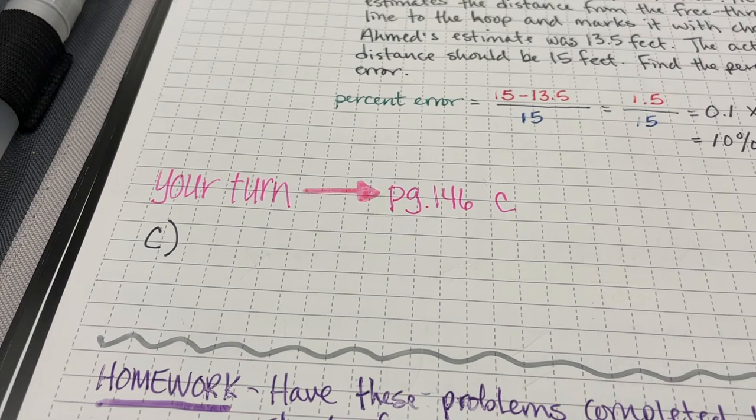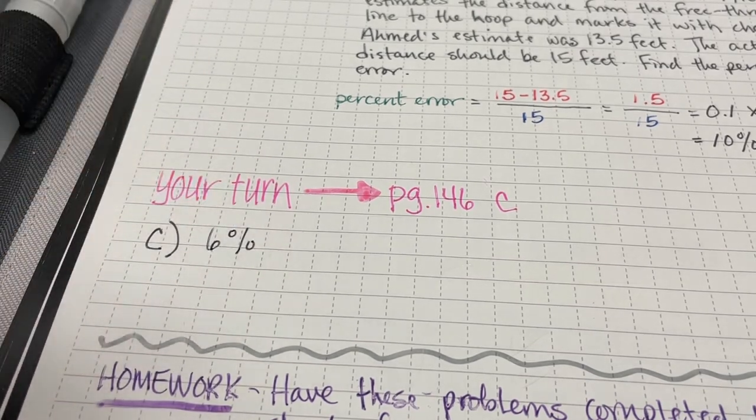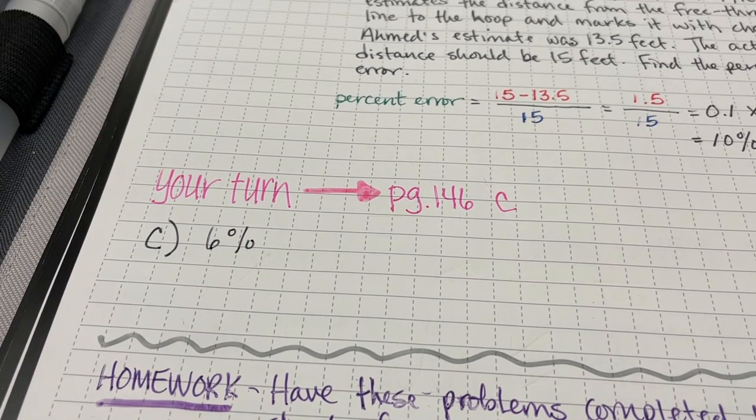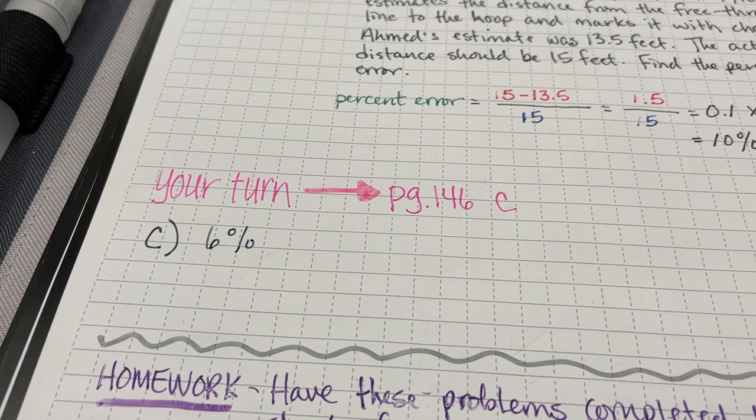In problem C, I have an error of 6%. So that means that what I thought was going to be the price, I was off by 6% of the original or the actual amount.